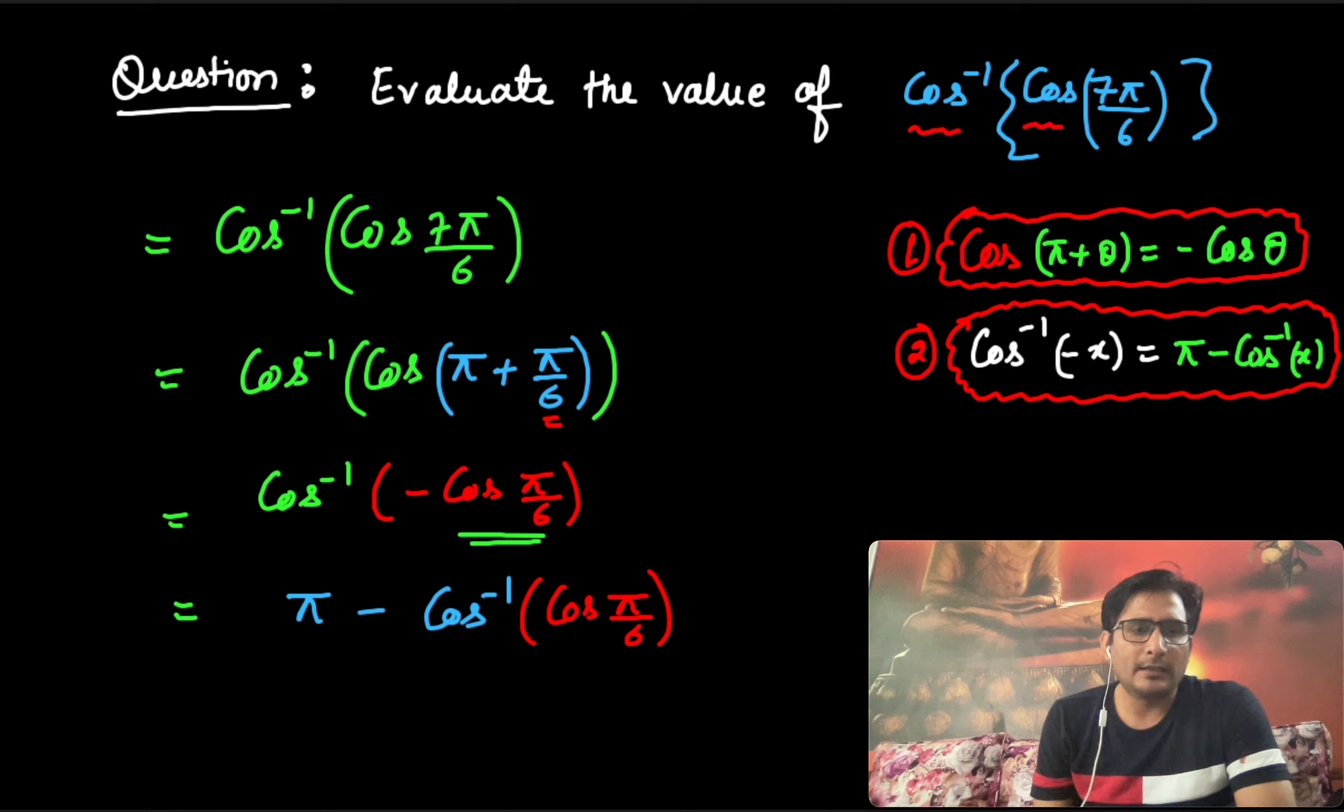Now this cos cancels this cos inverse, and it is π minus π by 6. Then the answer in this case is 5π by 6. I hope it is clear to you all now.